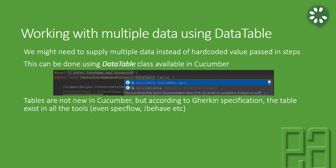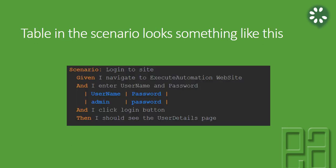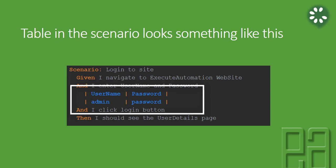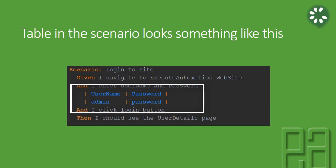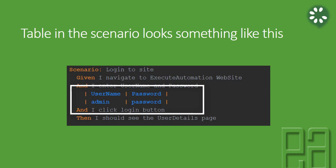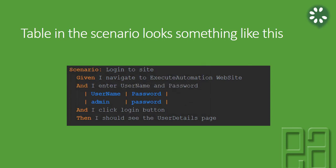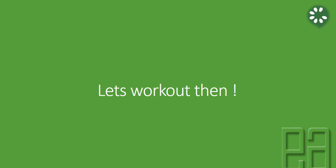Tables are not new in Cucumber. According to the Gherkin specification, tables exist in every tool. Tables in a scenario look like this: you use a pipe symbol, and the first line of the table — for example, username and password — is always considered as the column names. The lines following the first are always considered as the column values. You can have any number of values and any number of rows.